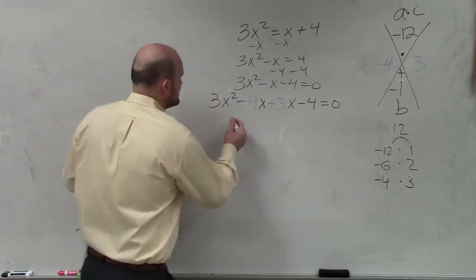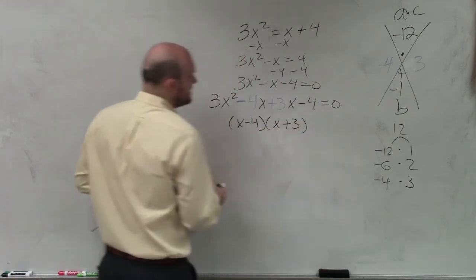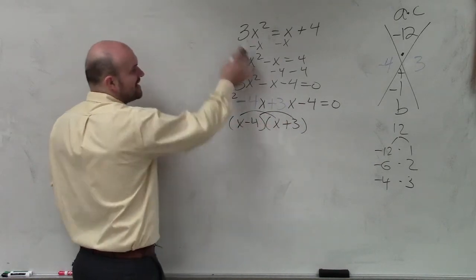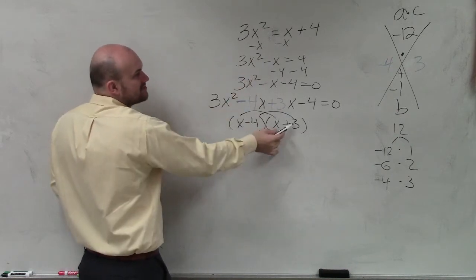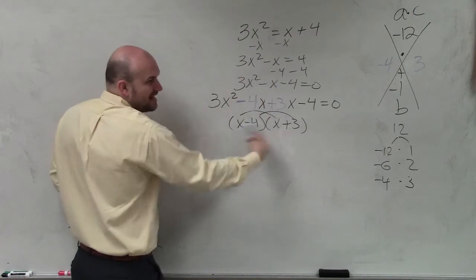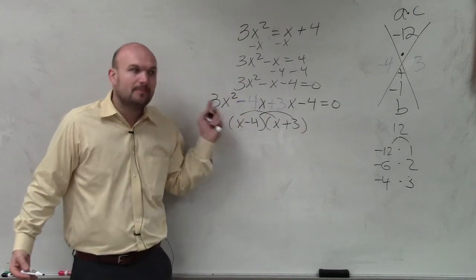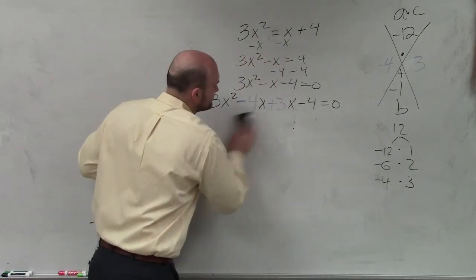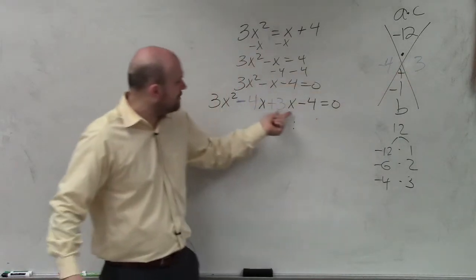Because if you were to do this, if you were to say, oh, why can't it be x - 4 times x + 3? Because, guys, if you were to multiply this out, just think about it. x times x, you're supposed to get 3x². x times x gives us x². Negative 4 times 3 is supposed to give us negative 4. That gives us negative 12. So this is not. When a is equal to 1, you can use those as your factors. But a does not equal 1 in this case. So what I did is I took my two values and I rewrote them.